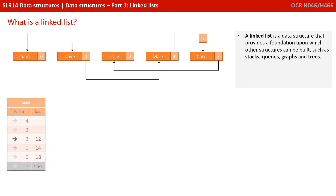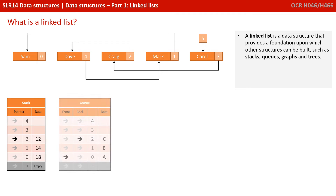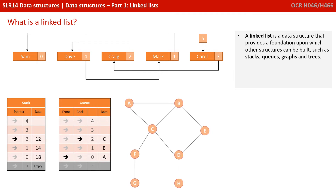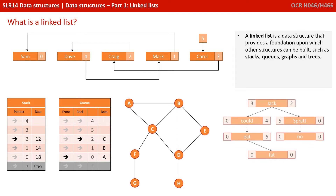A linked list is a data structure that provides a foundation upon which other structures can be built, such as stacks, queues, graphs and trees, or something we'll look at in later videos.